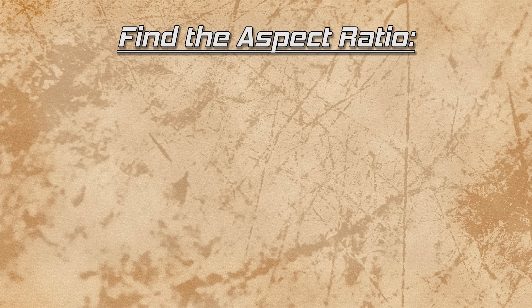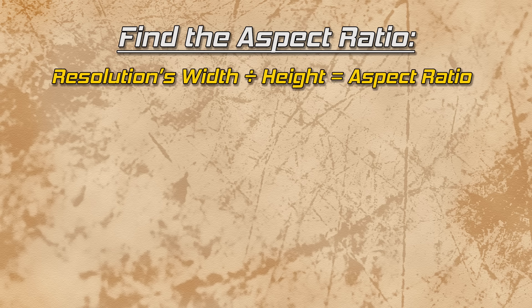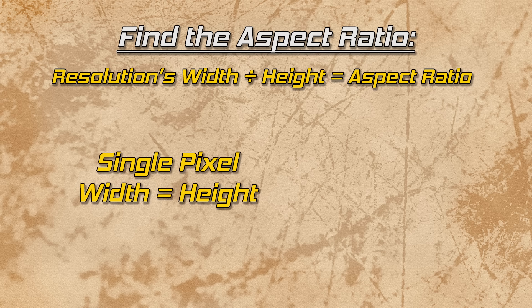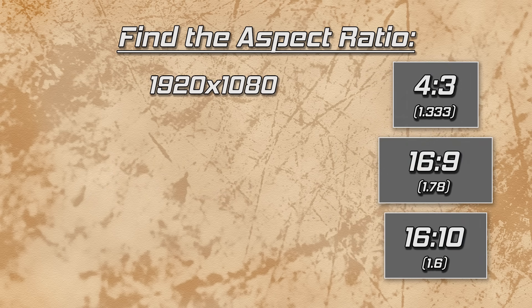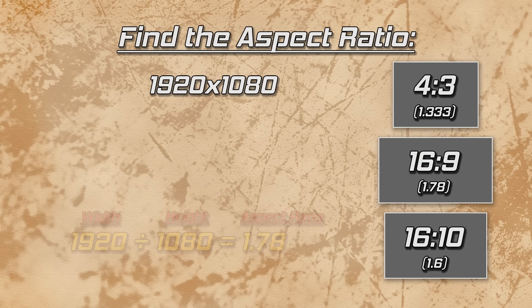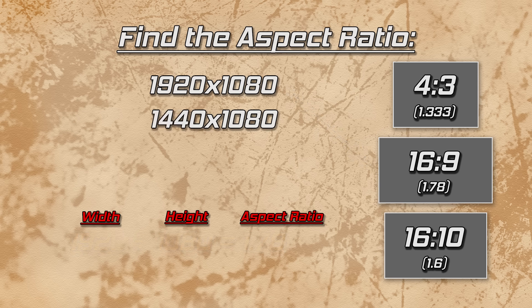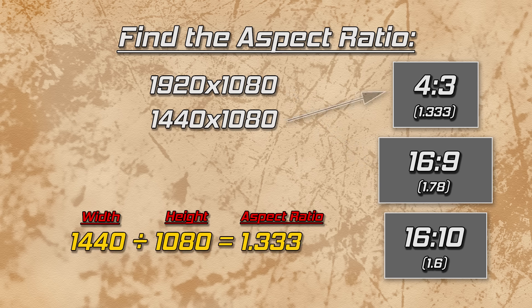In the modern era of fixed pixel displays, aspect ratio can be found easily by dividing the resolution's width by its height. It works because an individual pixel's width and height are the same. When you see 1920x1080, you can divide those numbers and find that it's a 16:9 aspect ratio. Likewise, 1440x1080 is a 4:3 aspect ratio, and thus the simple way to find a resolution's aspect ratio is to perform this division.